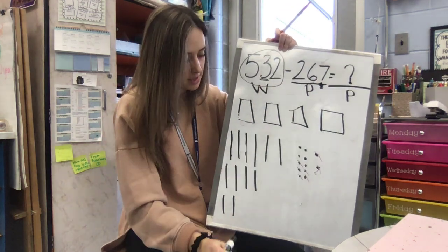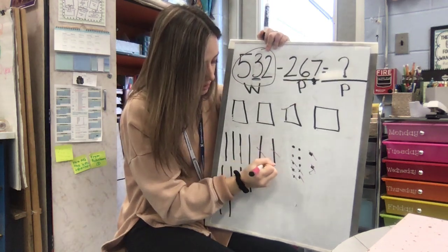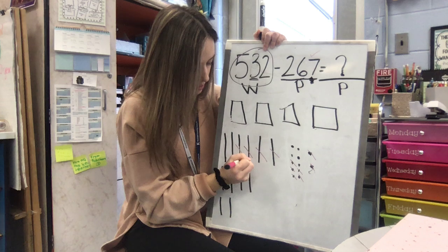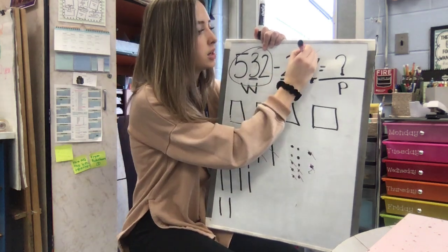So now can I take away 6 tens? I can, right? So 10, 20, 30, 40, 50, 60. Crossed out my 6 tens. Put a check above.